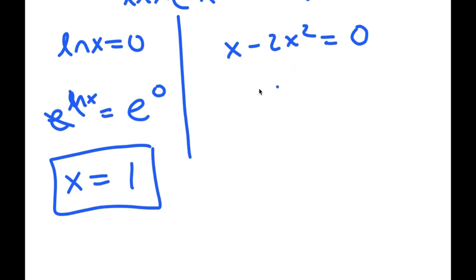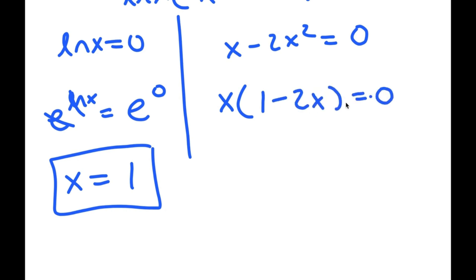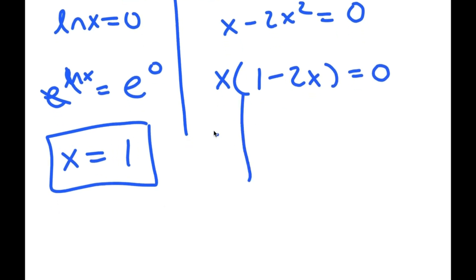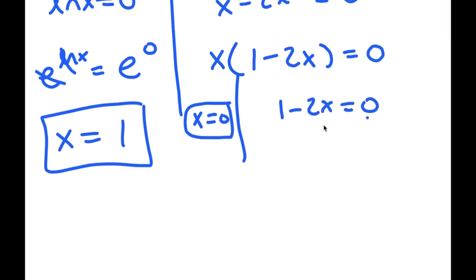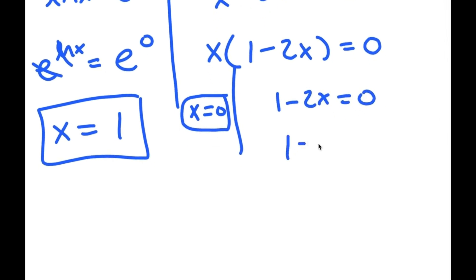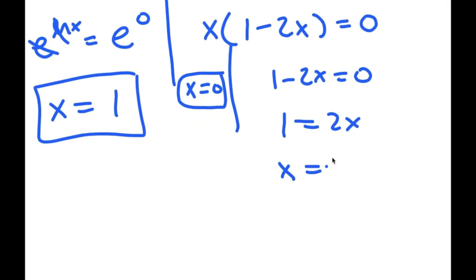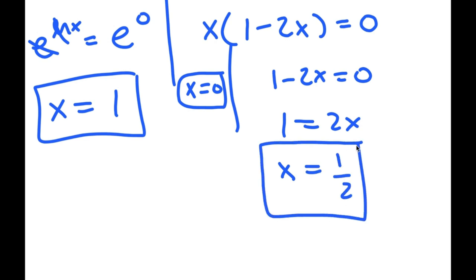Now for x minus 2x squared equals 0, I'm going to factor out x. So I get x times (1 minus 2x) is equal to 0. So this means that x equals 0 and 1 minus 2x equals 0, meaning 1 is equal to 2x and x is equal to 1/2. So these are my three solutions to this equation.